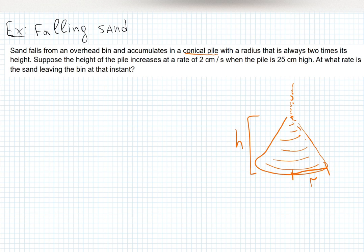At what rate is the sand leaving the bin at that instant? This is a related rates problem because two rates are mentioned — one is given and one is unknown. You need to find one if you know the other. Think of a speedometer: it records one rate, and from that rate you can find other rates.